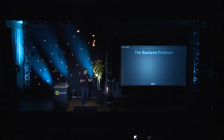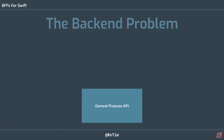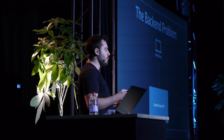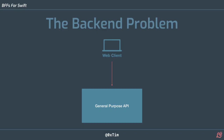Before we get into how BFFs work or what they are, we need to take a step back. A lot of apps come from a legacy background, and most of you will have a scenario like this: you have some sort of general purpose API that's been around for a while. When it was first created it had a single client — maybe a web client. Then as time went on, we added more and more clients, like an iOS app and an Android app, all using the same general purpose API.